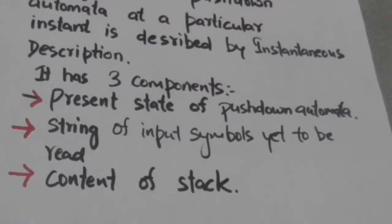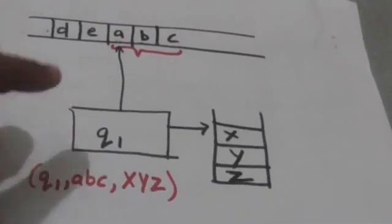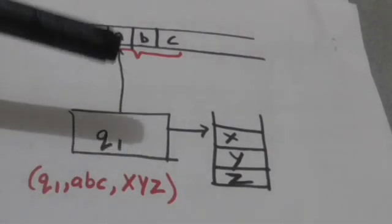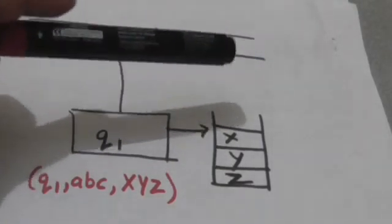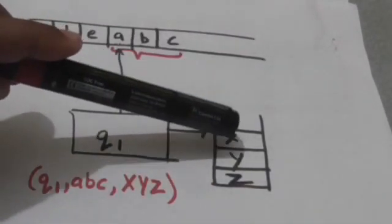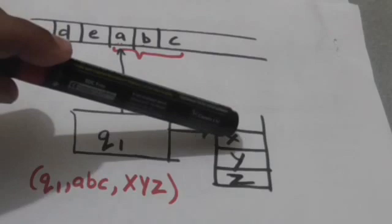To describe the configuration of a pushdown automata at a particular instant of time, we must know three things: first, the present state of the pushdown automata; second, the string of input symbols yet to be read; and third, the content of the stack. Now see this pushdown automata — its present state is q1, and the content of the stack is XYZ from top to bottom, where X is the symbol at the top of the stack.